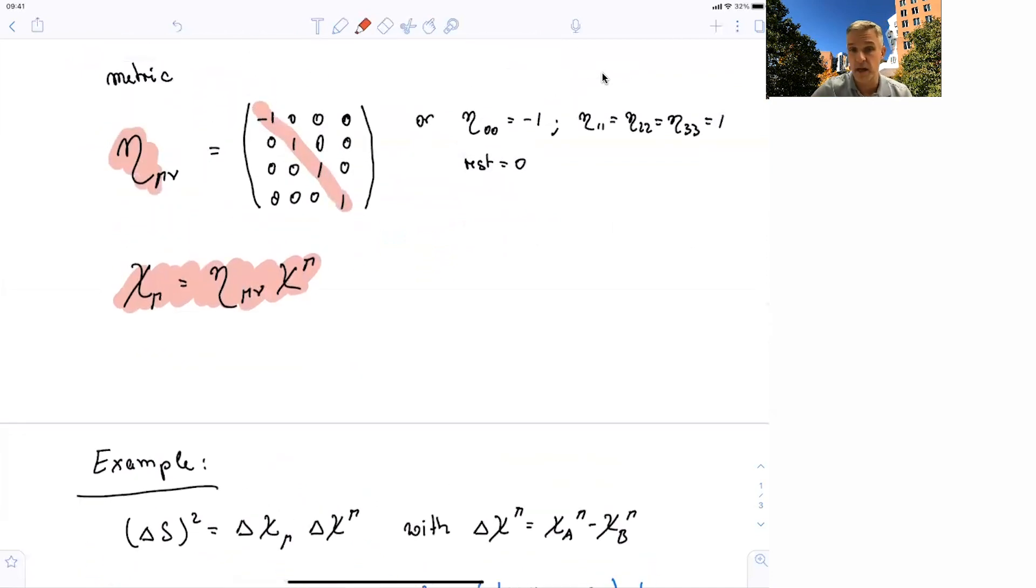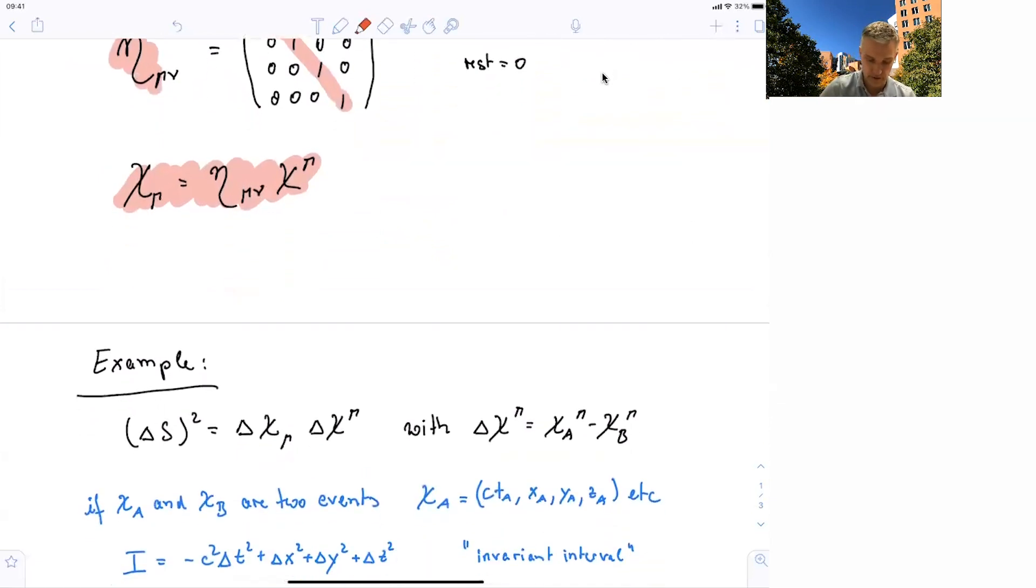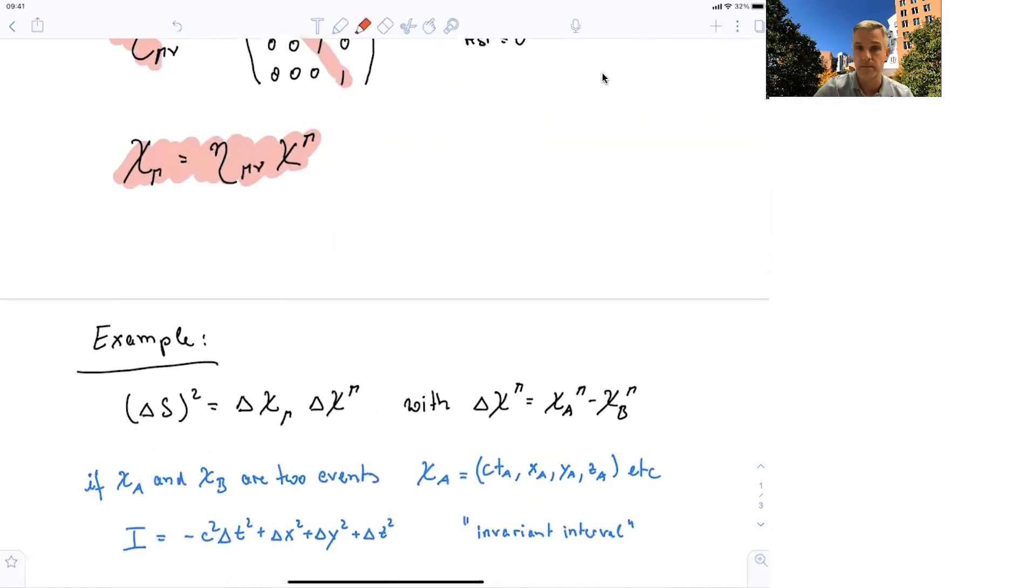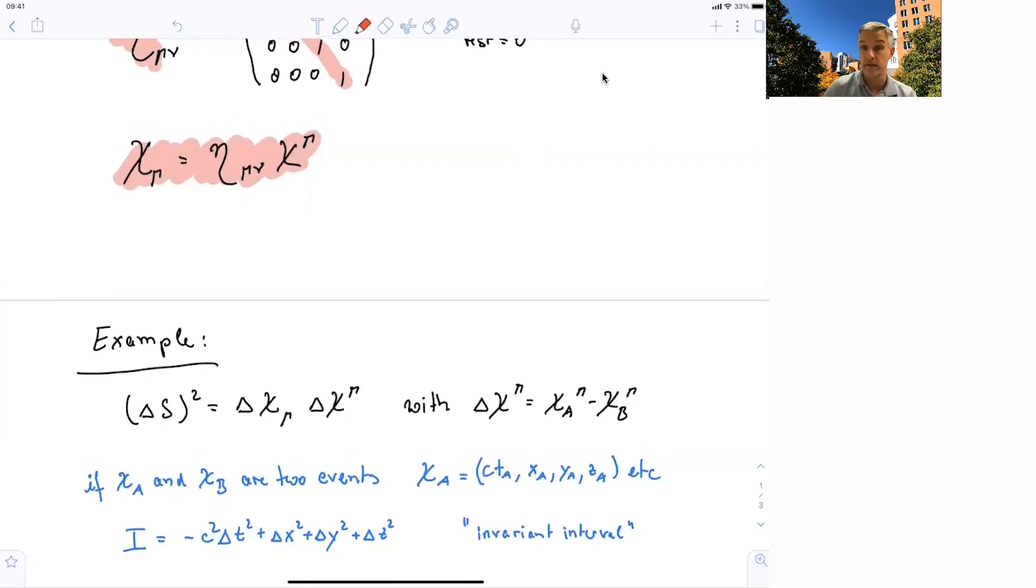An interesting example is the product of a four-vector with itself. We have already seen this because we saw this as our invariant interval. Here the four-vector is the distance in space and time between two events. So we looked at Δξ^μ times Δξ_μ, and Δξ^μ is the difference between event a and b. We have seen this already and calculated the invariant and showed that this squared distance of two events is actually invariant in the Lorentz transformation.